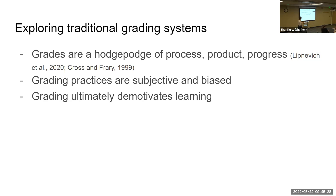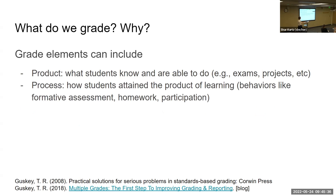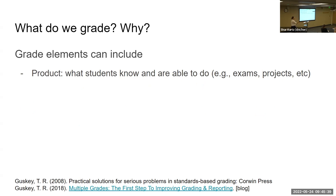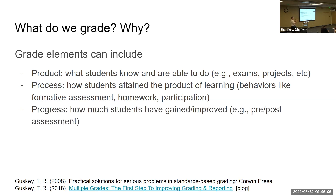What do we grade and why? These grading elements — product, process, and progress — each mean something distinct. Product is what students know and are able to do, typically measured by exams or major projects. Process is how students attained the product of learning — behaviors like formative assessments, homework, participation, and in-class activities. Progress — perhaps the most abstract — is how much students have gained or improved over a unit or across the semester, often measured through pre- and post-analyses.